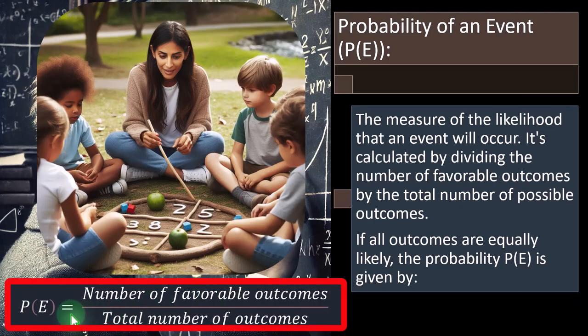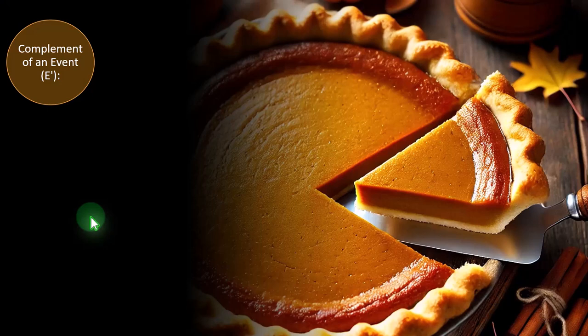So P(E) equals the number of favorable outcomes divided by the total number of outcomes. If we're looking at our dice situation and want to pick a four, that's one favorable outcome divided by six possible outcomes — so one divided by six. For even numbers, that's three favorable outcomes — two, four, six — divided by six. If the die is weighted and not even, we can't use that simple calculation. We would probably have to use repetition to determine the likelihood of the die landing on any particular number.